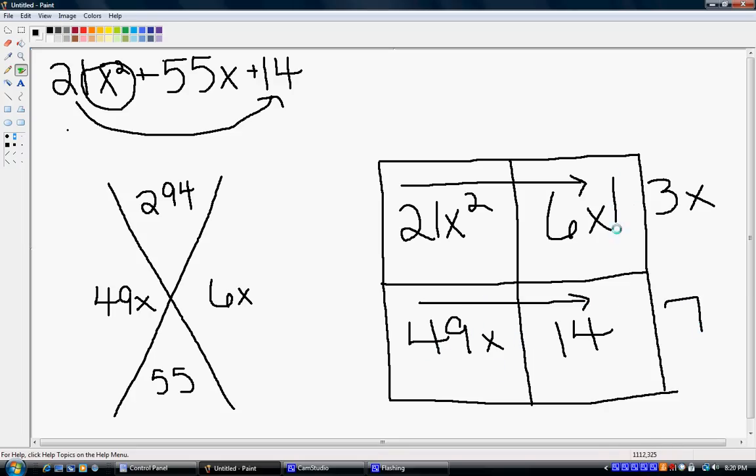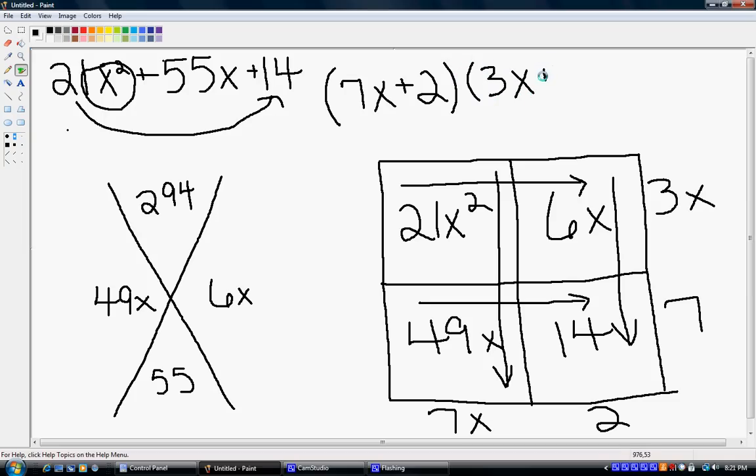Then you're going to go down, so you have to find the greatest common factor in 6 and 14, which is 2. And this way, that would be 7x. And by doing that, you get your answer: 7x plus 2 times 3x plus 7.